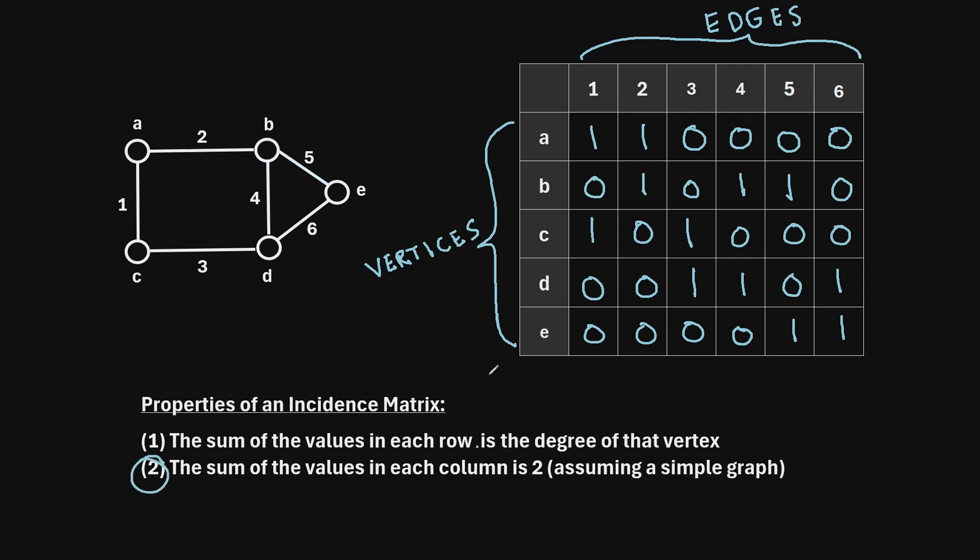Now, the other property about an incidence matrix that's worth knowing is that the sum of the values in each column must be 2, assuming we're talking about a simple graph that has no loops. So if we look at each of the columns in our incidence matrix and we take the sum of the values in each column, we'll find that the sum is 2 for every single column.